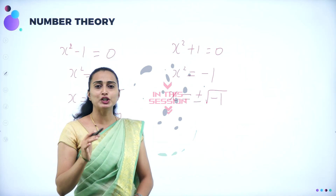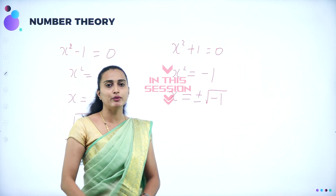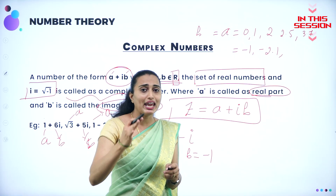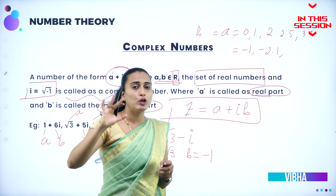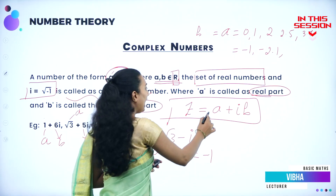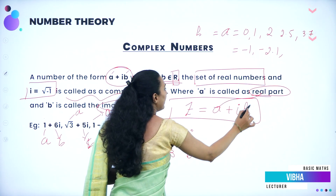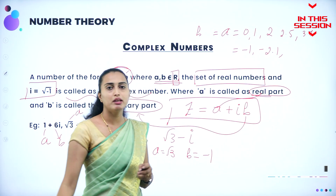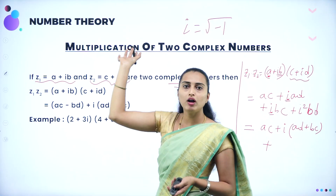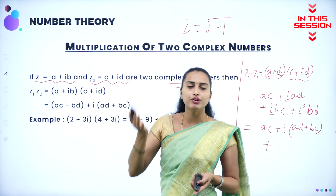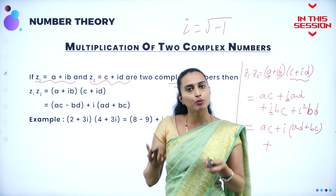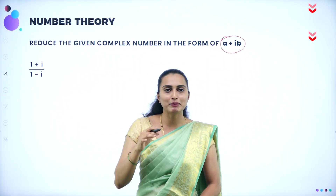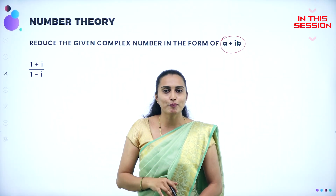If you are getting under the root any negative number, it leads to the imaginary root. Where A, B belongs to the real number — A is called the real part and B is known as the imaginary part. The imaginary root is root of minus 1. If it is Z1 by Z2, what you need to do? Multiplying conjugate of a complex number.